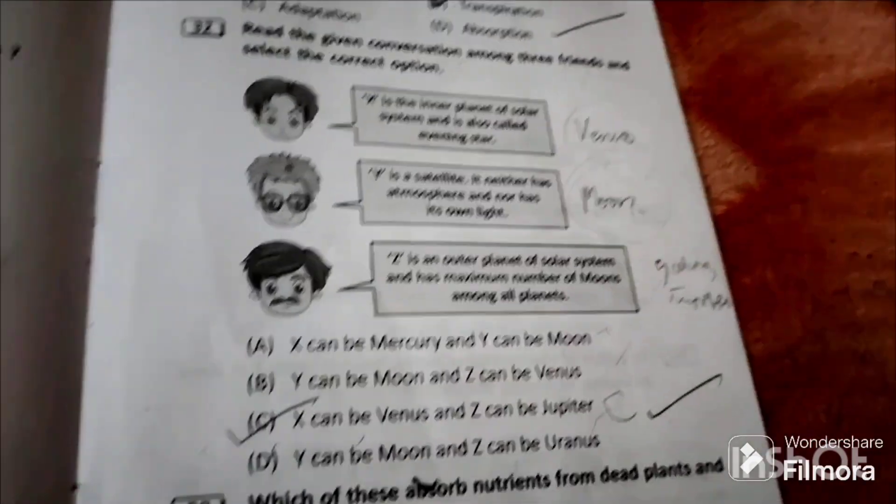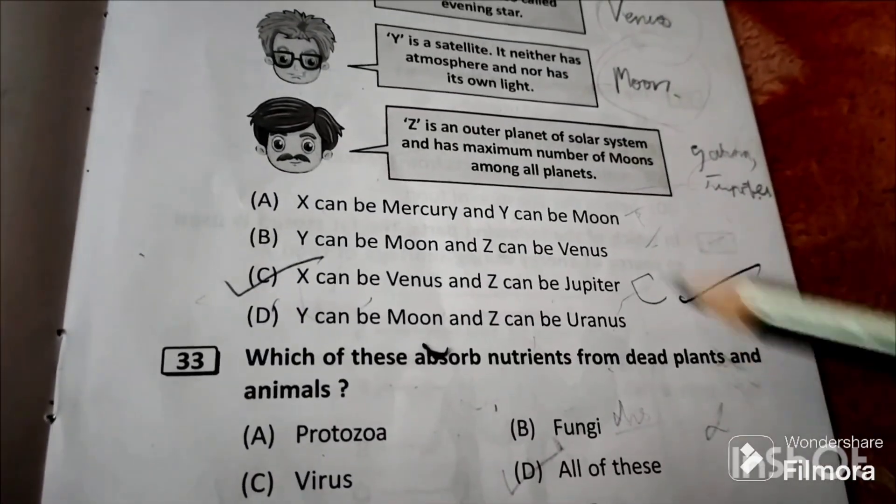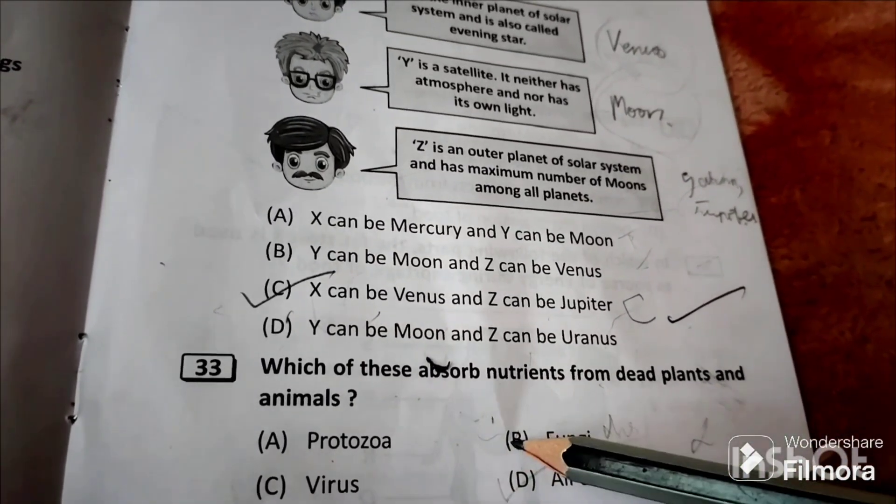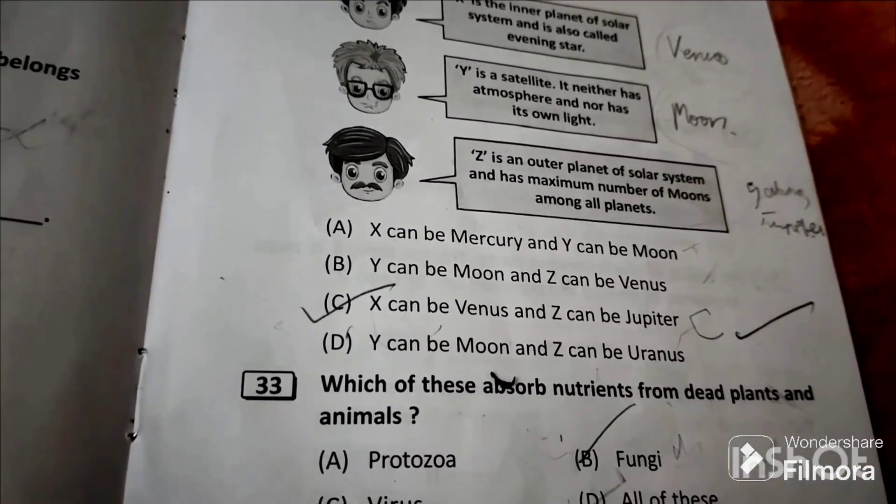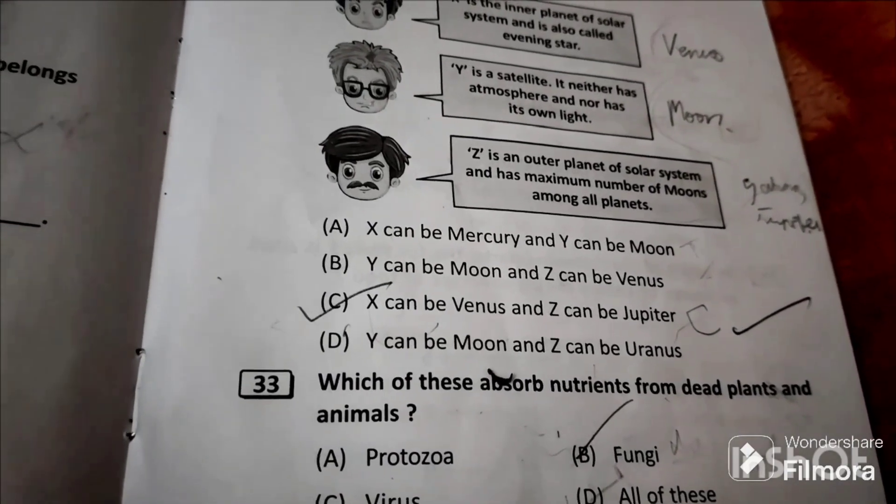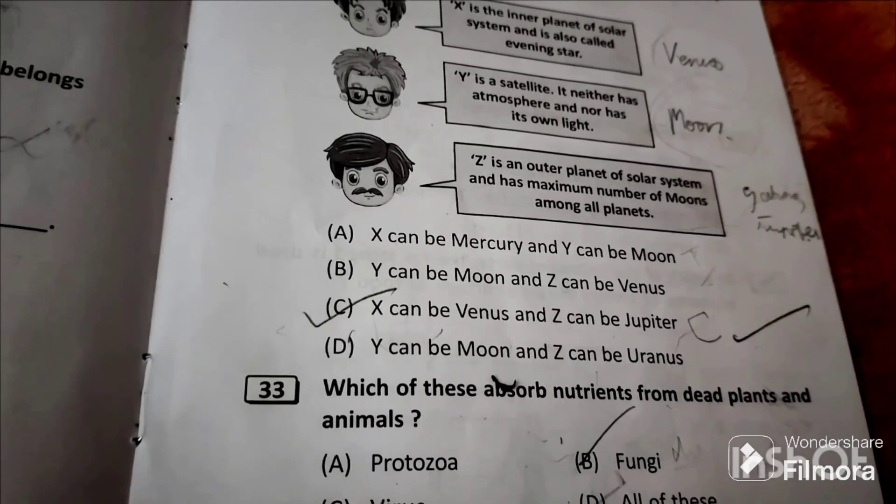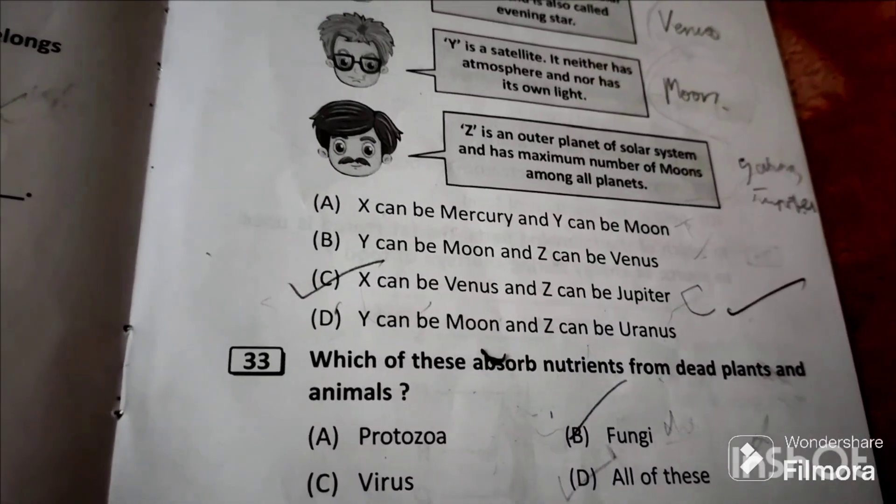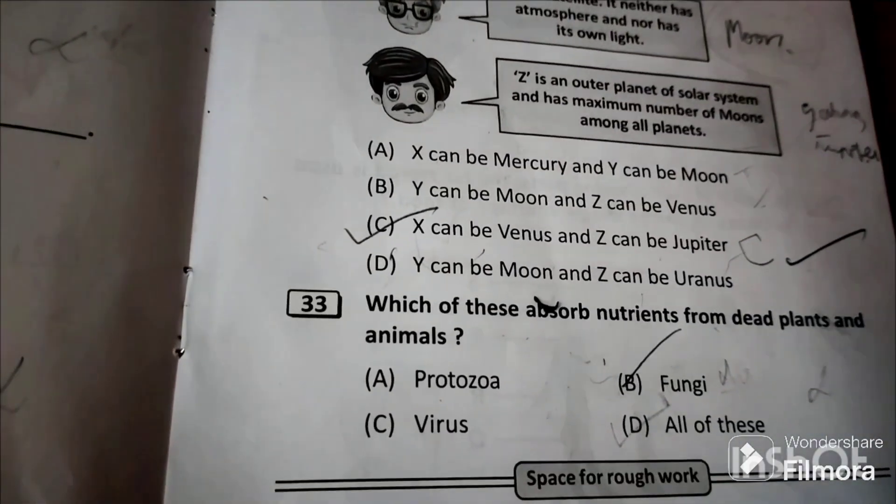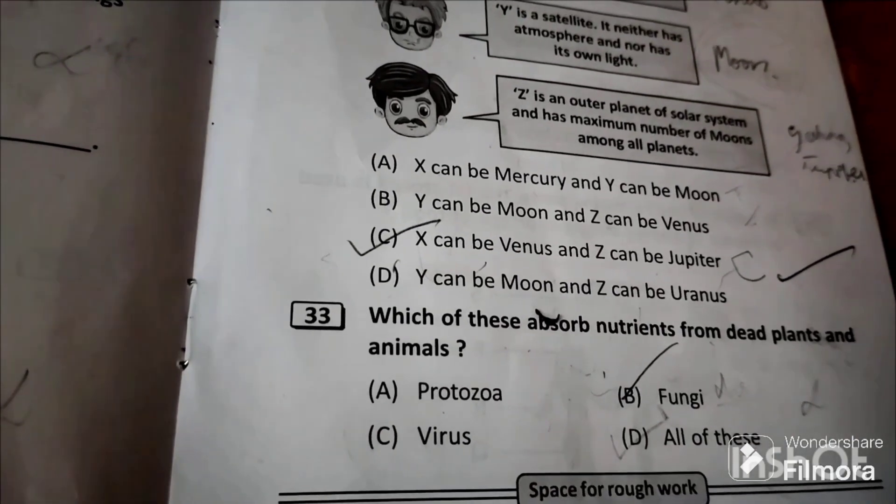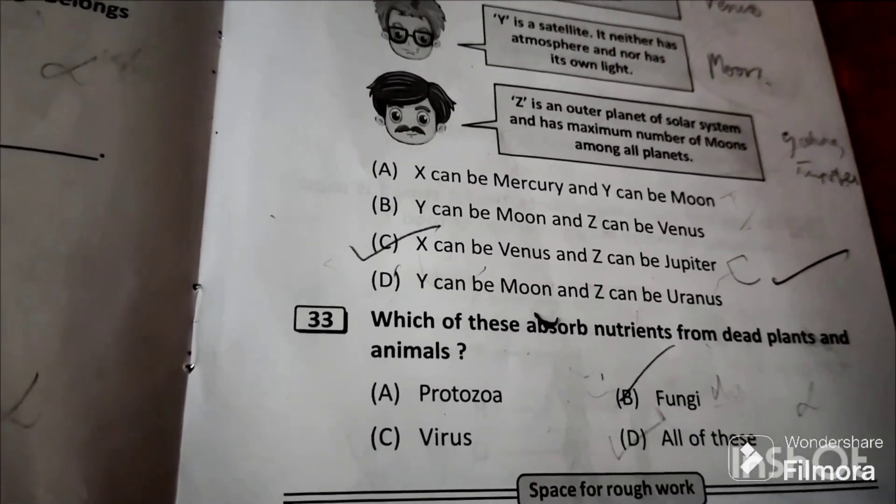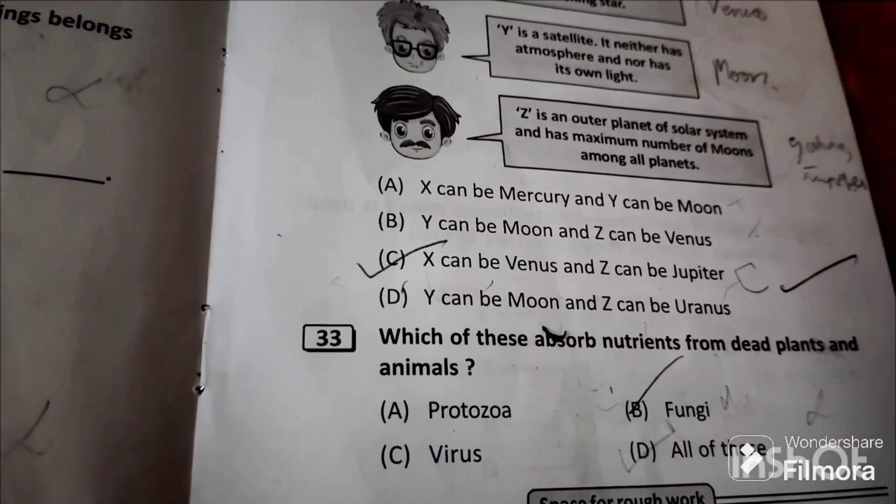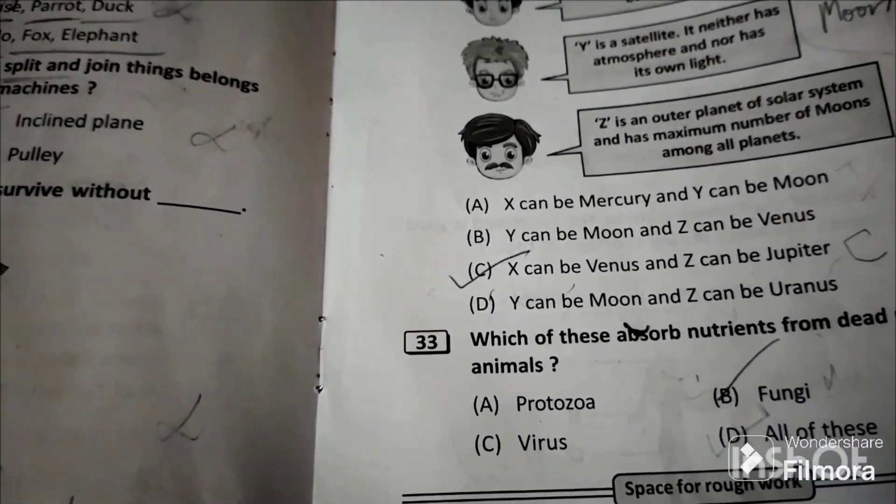Question 33: Which of these absorb nutrition from the dead plants and animals? Fungi. Fungi and mushroom absorb nutrition from decayed and dead plants and animals. Protozoa and virus are all microorganisms. They live inside living cells, living organisms, living body. But fungi and mushroom feed on dead and decayed plants and animals. So option B is the answer.